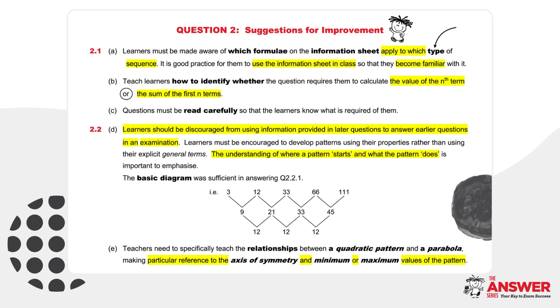And then for question 2.2: Learners should be discouraged from using information provided in later questions to answer earlier questions. They must be encouraged to develop patterns using their properties rather than explicit general terms. The understanding of where a pattern starts and what it does is important to emphasize. The basic diagram was sufficient in answering question 2.2.1. Teachers need to specifically teach the relationships between a quadratic pattern and a parabola, making particular reference to the axis of symmetry and minimum or maximum values.